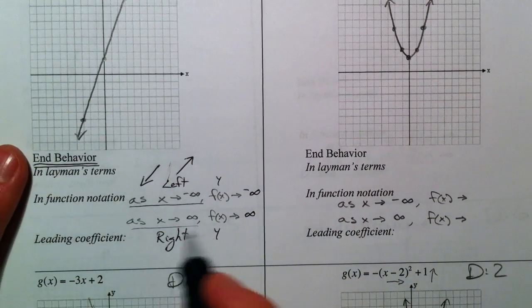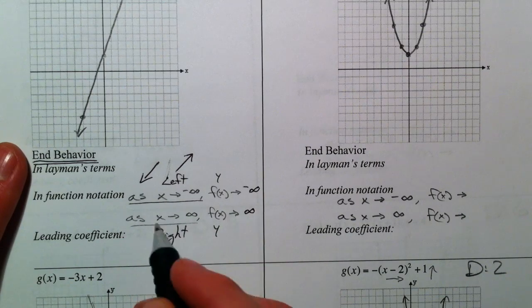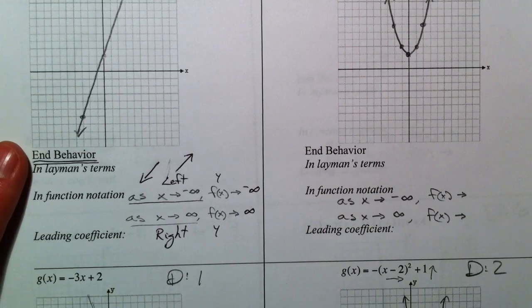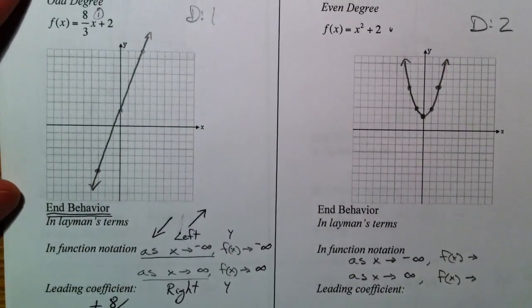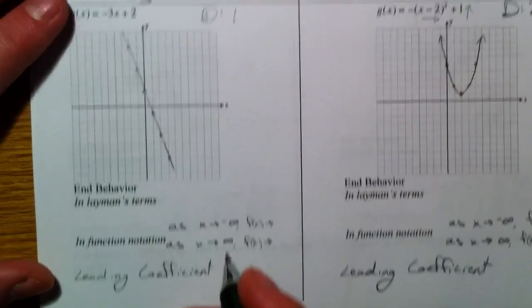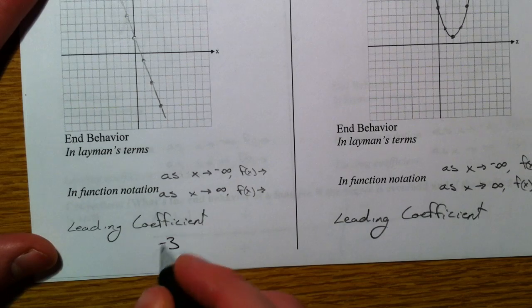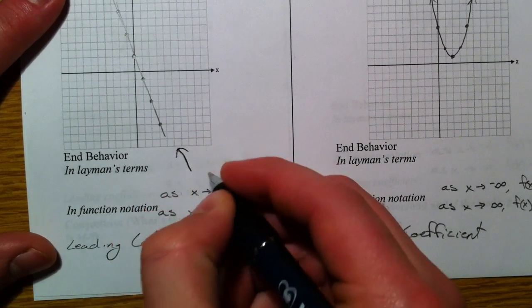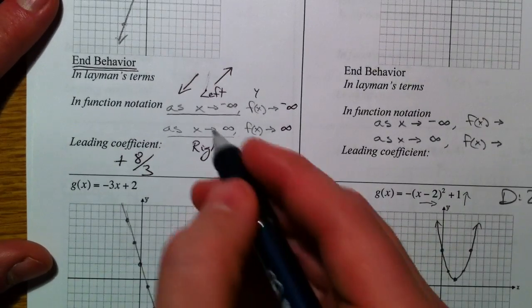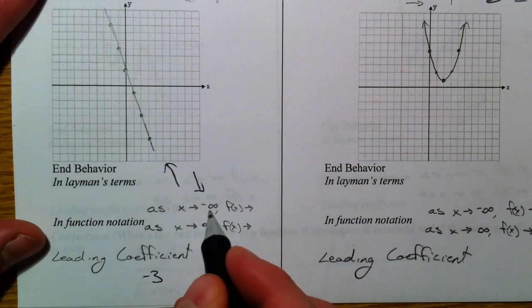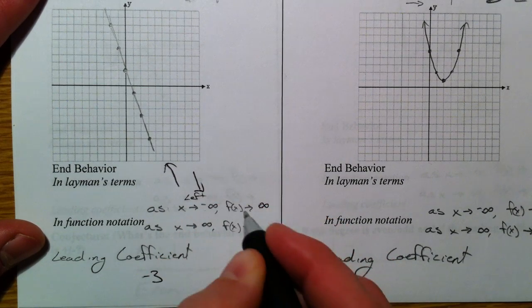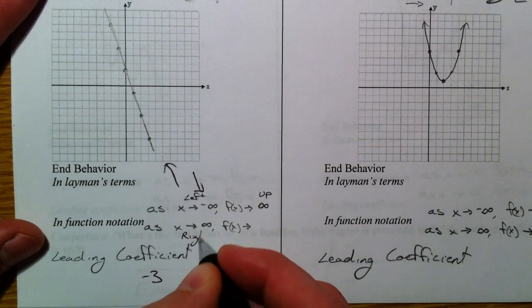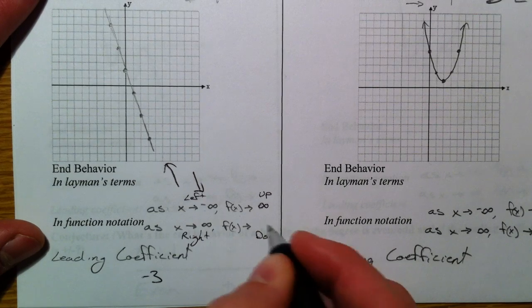If it's a negative leading coefficient — negative 3 — it's going to go up to the left and down to the right. Notice that it's the exact opposite. Down to the right means as x goes to the left, f of x goes to positive infinity. As x goes to the left, y goes up. As x goes to the right, y goes down — so down is negative infinity.